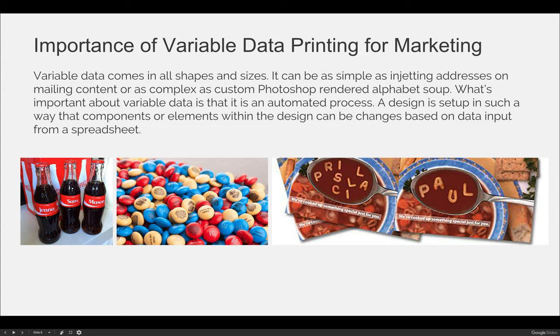M&M's has done something very similar, for longer than Coke has — you can personalize what's on your M&M. You can go on their website, upload your photograph, and your photograph can be printed onto your own M&M. And then there's the example of the alphabet soup, which looks really complicated — like somebody would have to spend hours Photoshopping the image over and over to input certain names like Paul and Priscilla.